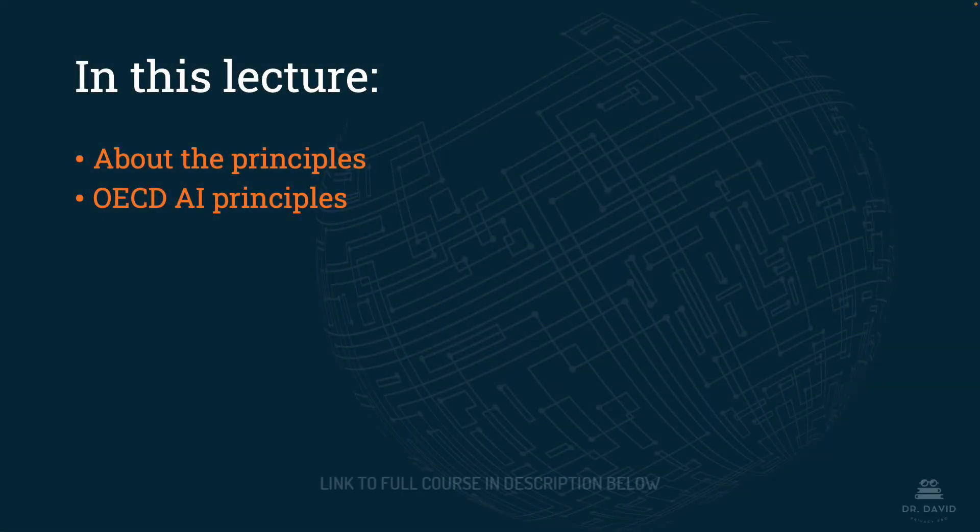In this lecture, we are going to discuss the OECD AI principles. You'll remember from the end of domain one that we looked at the OECD classification framework. It's important to clarify at the outset that these are different — the principles are separate from the classification framework. Moving forward, you're going to see a lot of the same acronyms applied to different documents, so it's really important that you look at the document name as well. We'll begin with a little bit of context about the principles, and then look at the five principles in depth.